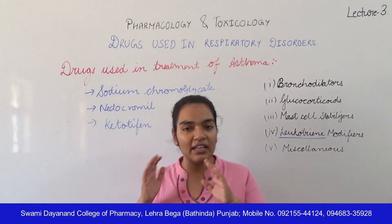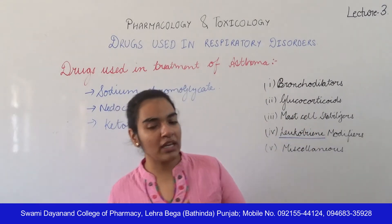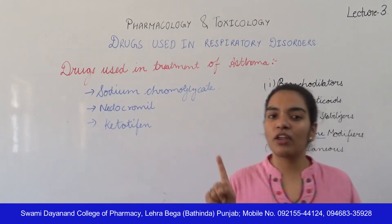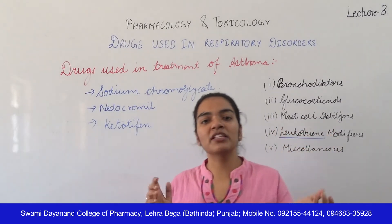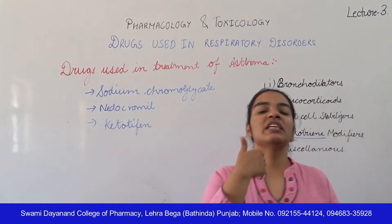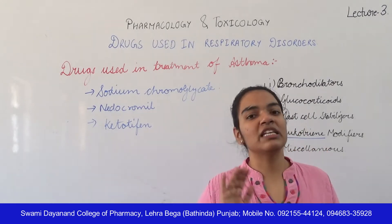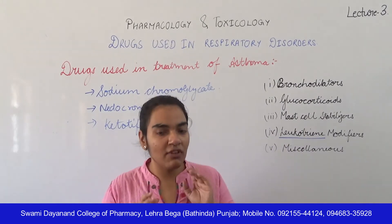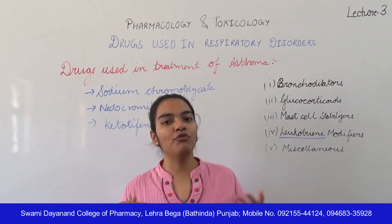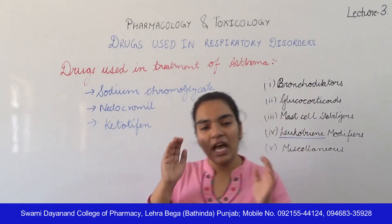In asthma, airway obstruction occurs. If the patient cannot breathe, one cause is bronchoconstriction or bronchitis. Due to allergies, genetic factors, or other reasons, we have inflammation of our bronchioles. This inflamed tissue causes the release of leukotrienes. When leukotrienes are released, they cause further bronchoconstriction — bronchioles are first narrowed by inflammation and then further narrowed by leukotrienes, making asthma severe or chronic.